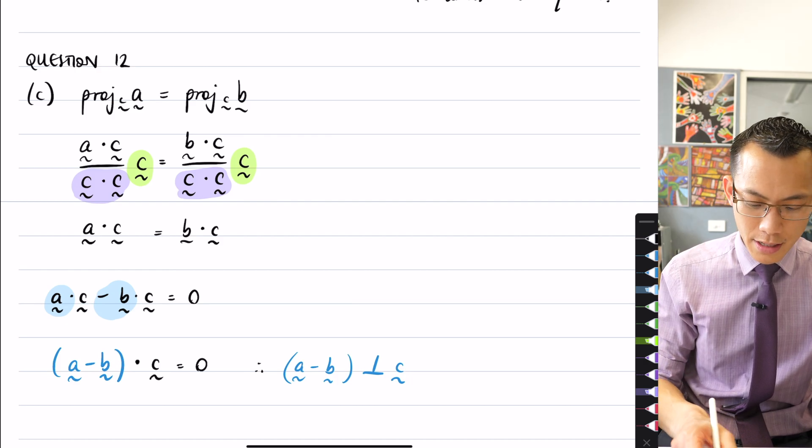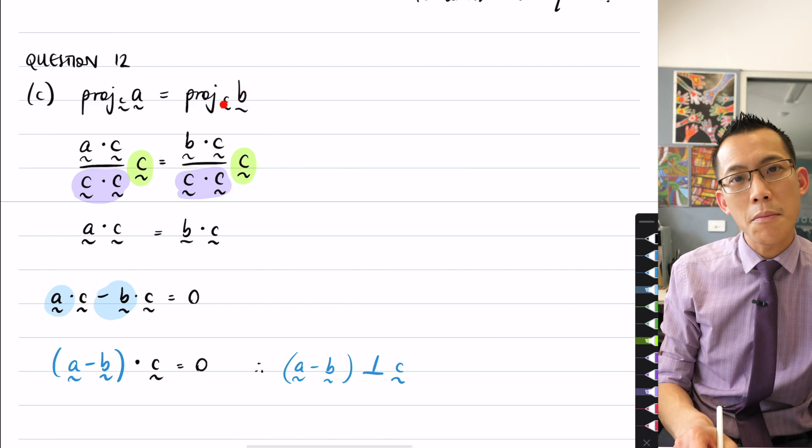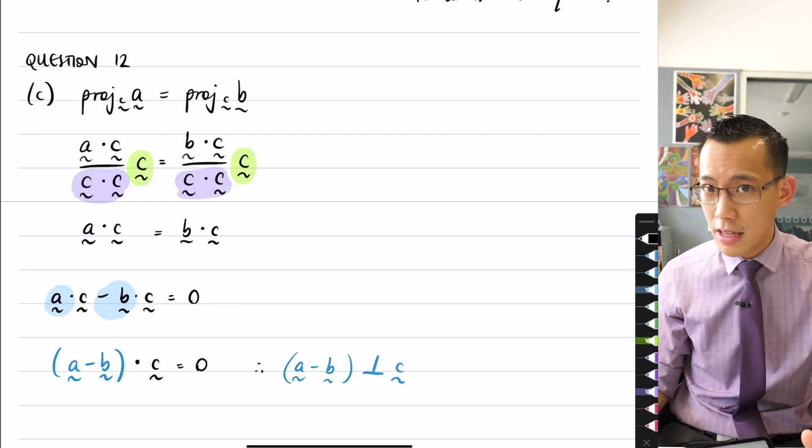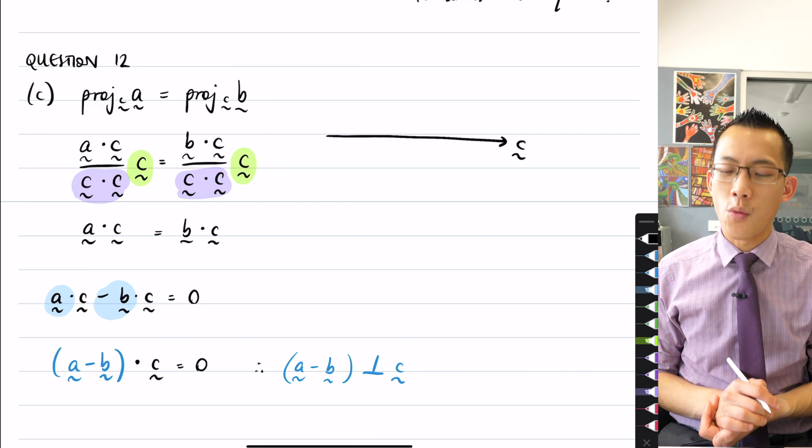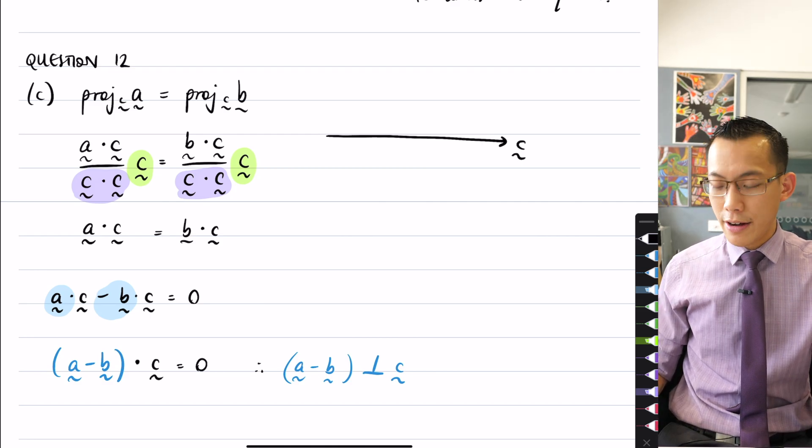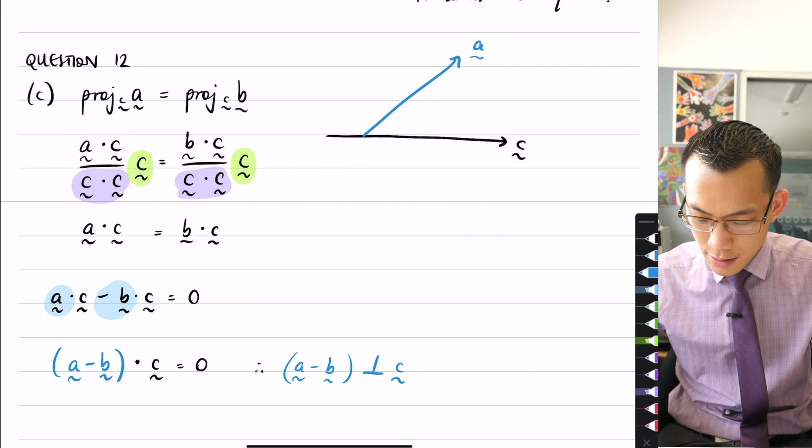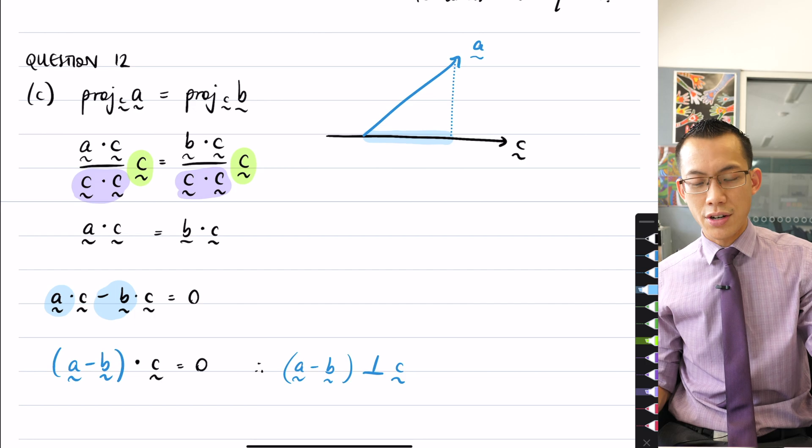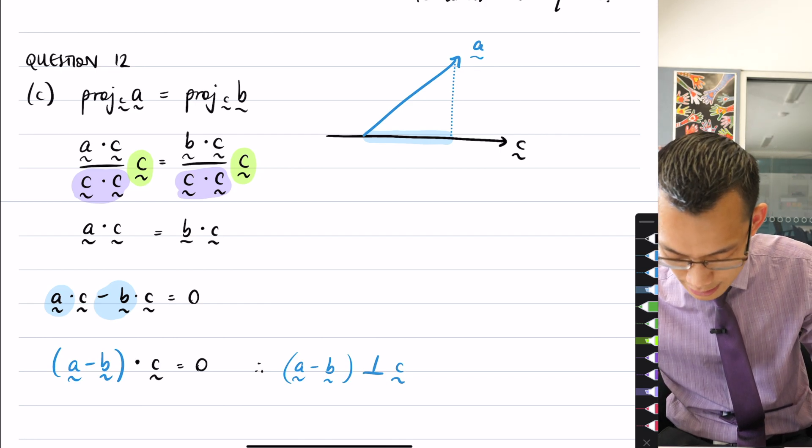Several people, when they had a look at this result here, they're like, oh, the projection of A onto C and the projection of B onto C are the same. What might that look like? Now, this is not a bad way to approach the question. I really like that you wanted to think about it visually, but I want you to see the problems that ensued. So if you imagine, let's call this C. What would be a potential scenario where the projection of A onto C is the same as the projection of B onto C? And this was a diagram that I saw a bunch of times. If you've got some A up here, what does the projection of A onto C look like?